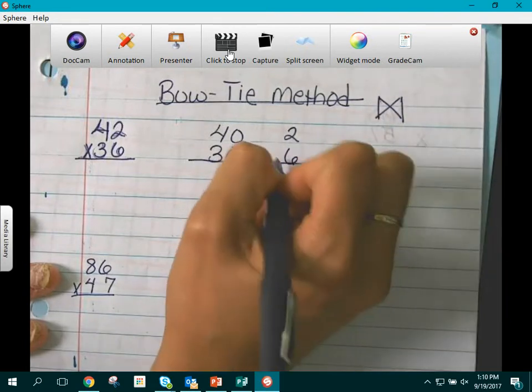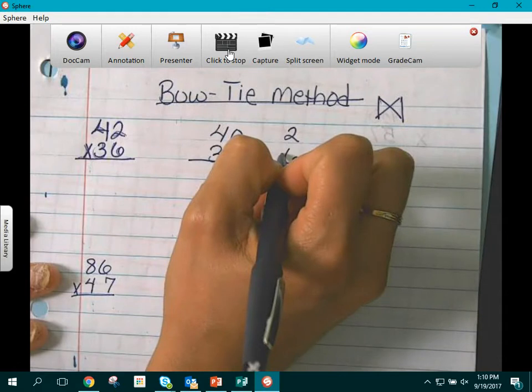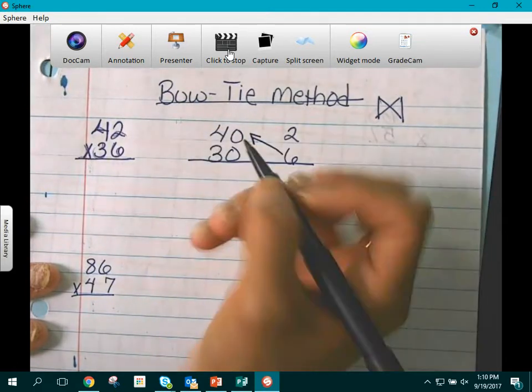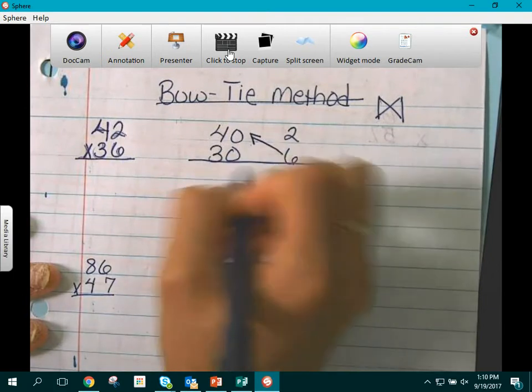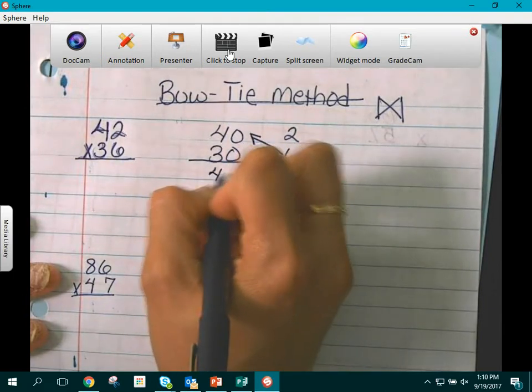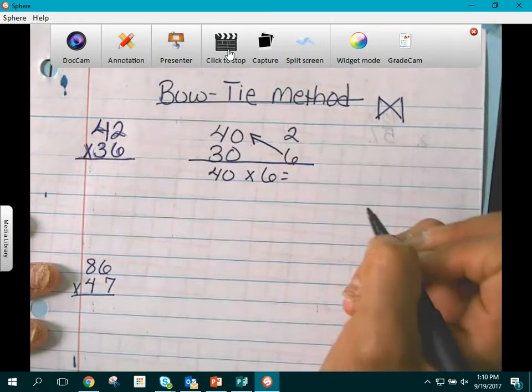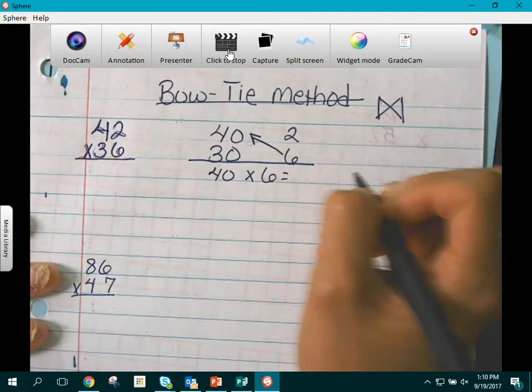So here we are going to start with our 6 ones and we are going to multiply times 40 which is 4 tens. So they are going to write the equation of 40 times 6 which when it is multiplied 6 times 4 is 24.